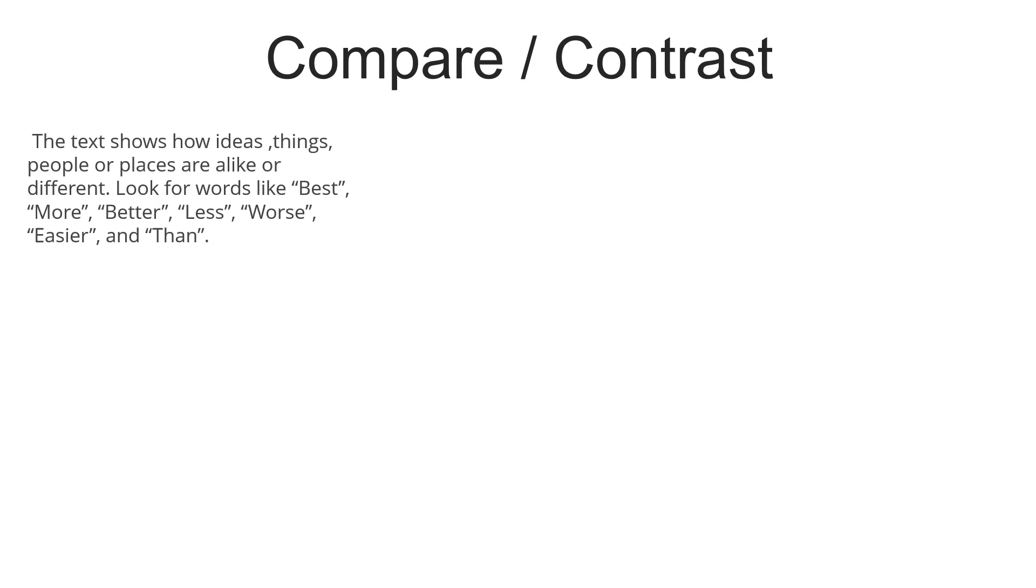If you want to compare and contrast two things, ideas, people, or places, we should use this pattern. Also, if you want to know if a text is using this pattern, we should look out for transitional words like best, more, better, less, worse, easier, and then, and other transitional words that show that two things are being compared and contrasted.